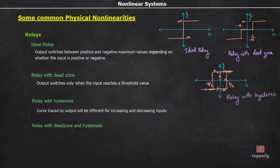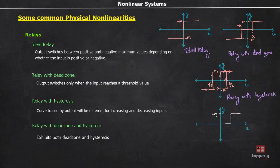Coming to the next category, that is relay with dead zone and hysteresis. This is a relay which exhibits a dead zone and hysteresis together. If we draw the characteristics, initially there is a dead zone and once the threshold value is reached, the output switches to plus M. Now if we decrease the input, the output will remain as plus M for a value less than the threshold value A because of hysteresis. In similar fashion, if we trace the curve to the negative input axis, the curve will be something like this, and on further increase of the input, the curve traces back in similar fashion.